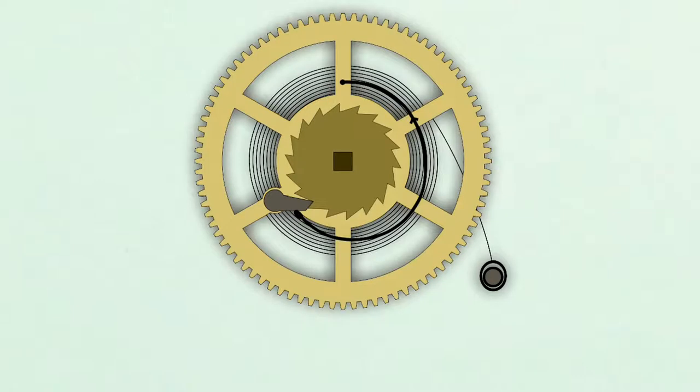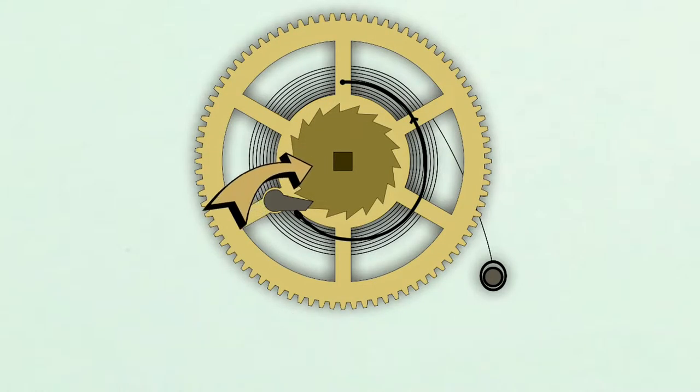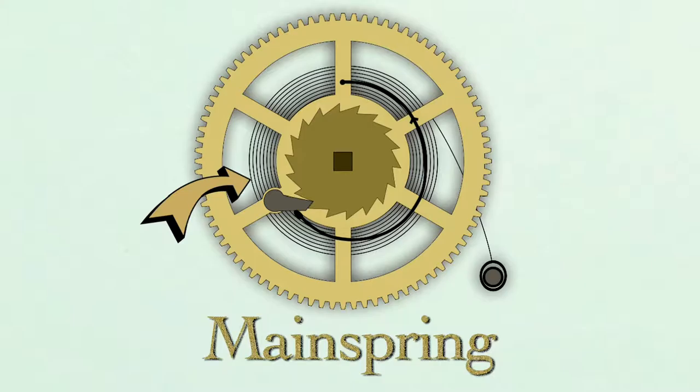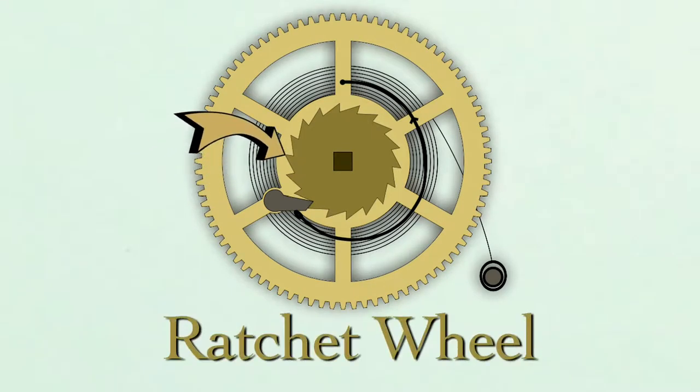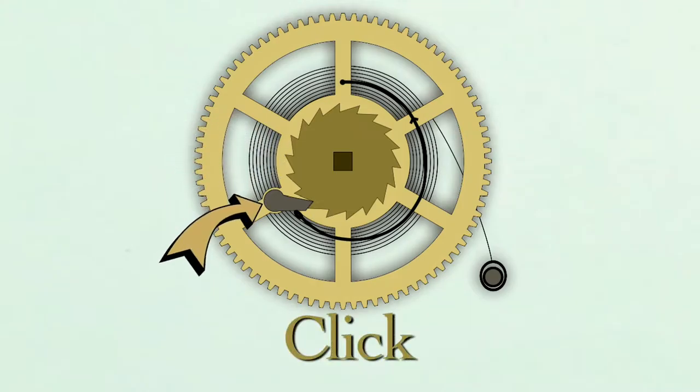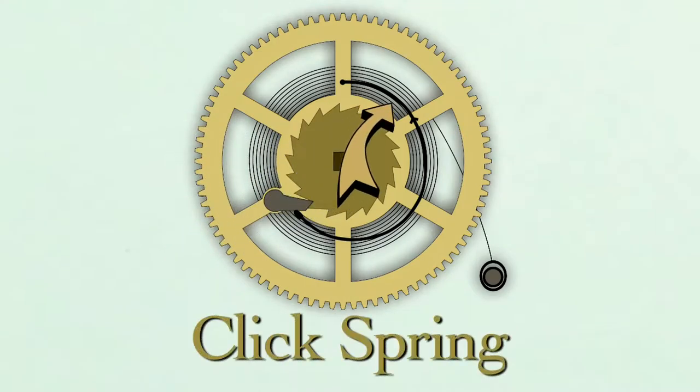The mainspring assembly is made up of the winding arbor, mainspring, great wheel, ratchet wheel, click, and click spring.